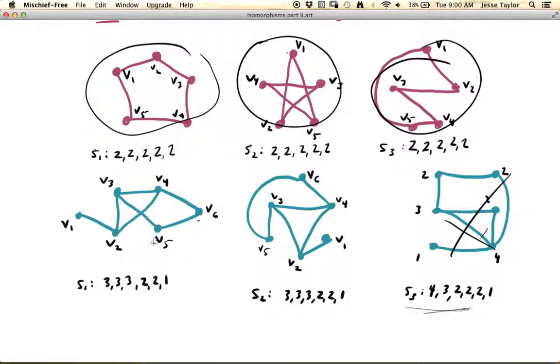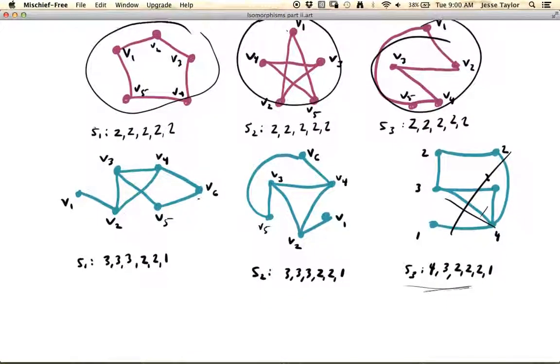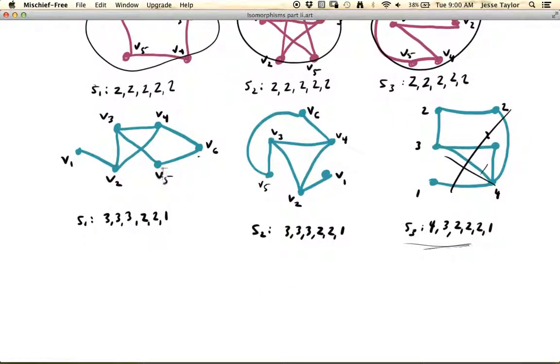Now you can actually check this. The formal way to check this, if these are isomorphic, would be to list all the edges. And if all the edges match exactly, then you have two isomorphic graphs. So I'm going to leave that up to you. You can just check this yourself. Check to make sure the edge sets match exactly. And if they do, then you have isomorphic graphs.